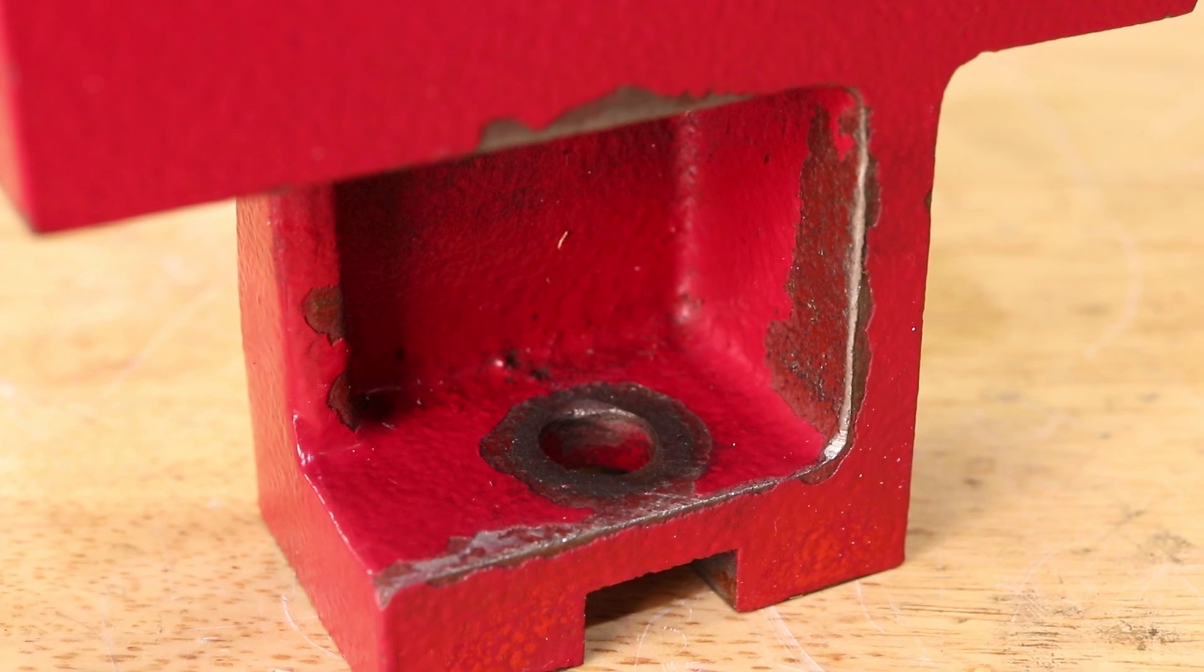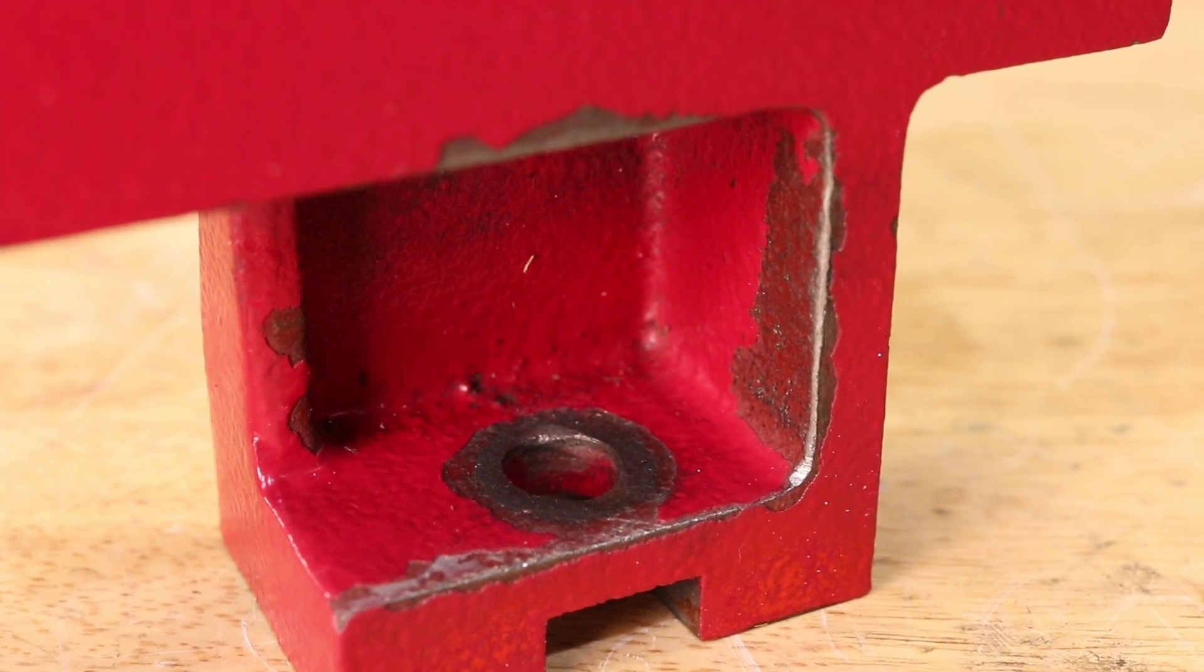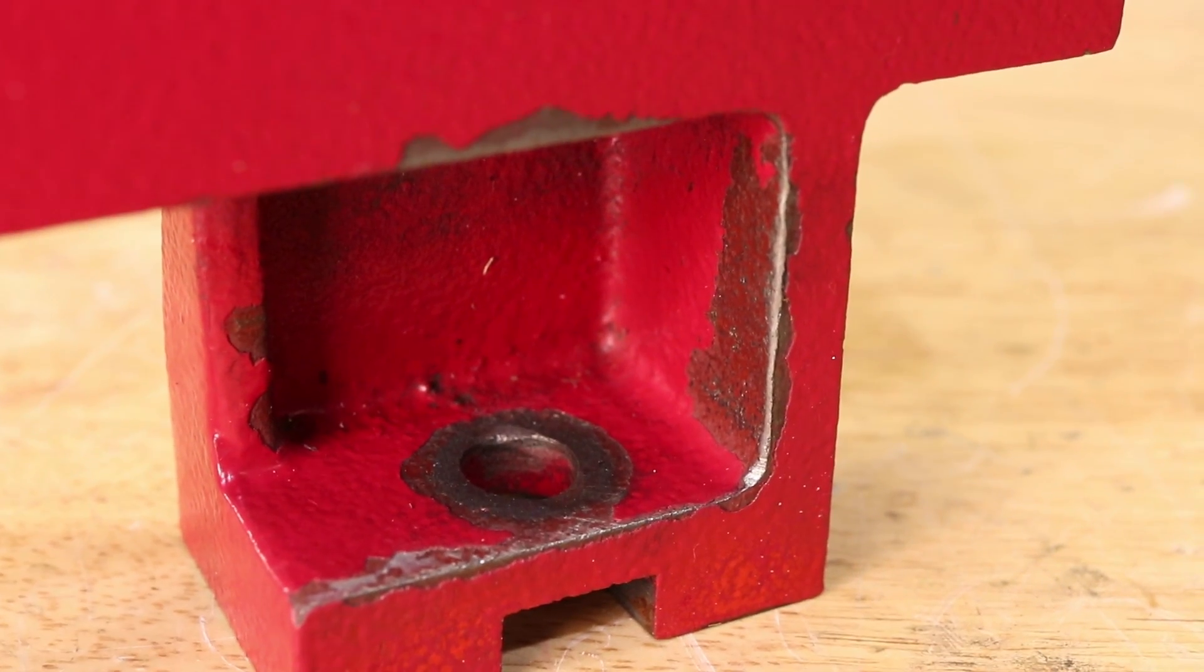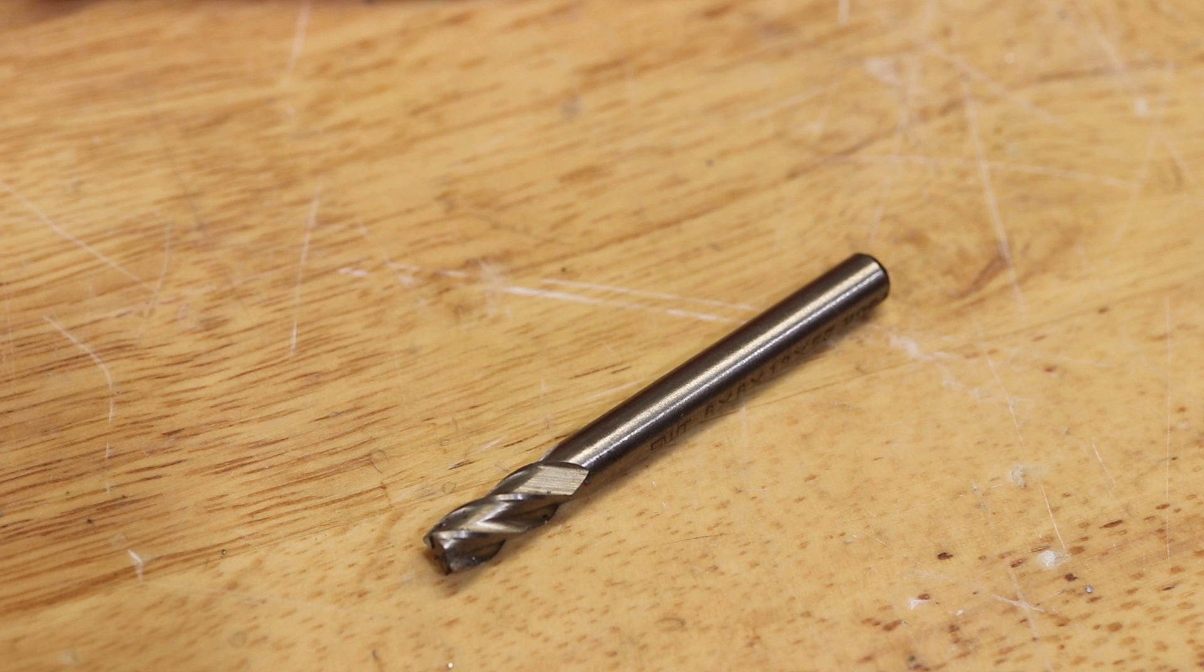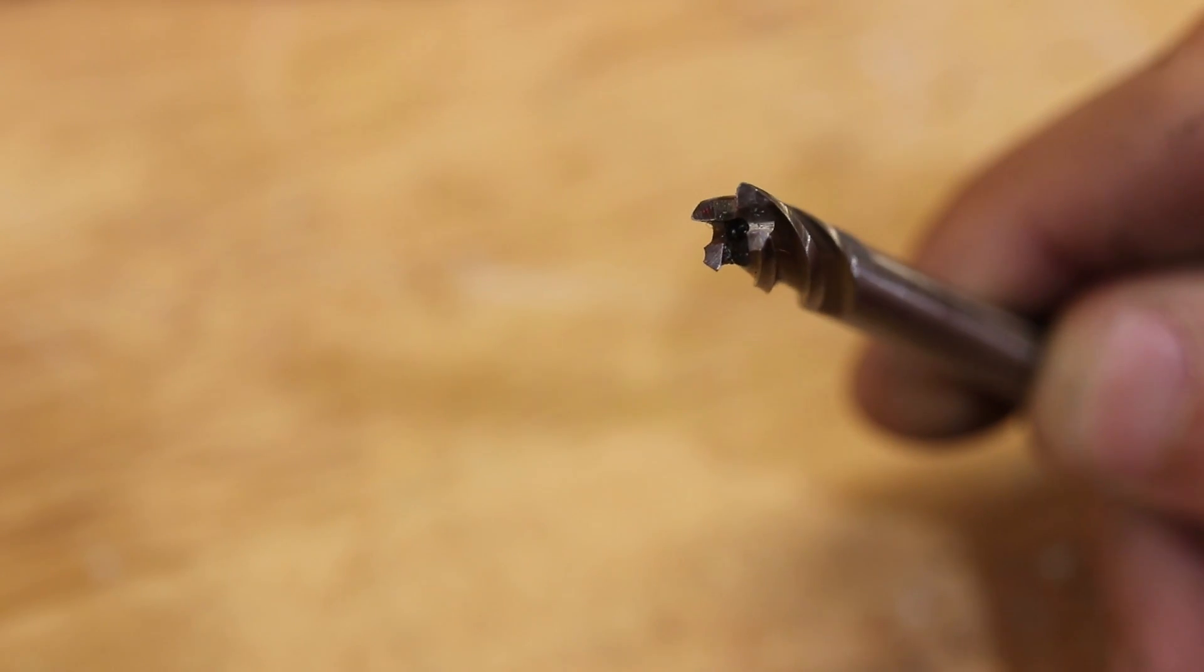Now because the part I'm machining is pretty deep, optimally I'd use a reduced shank end mill to prevent the shank from rubbing on the cast iron. Instead of going out and buying an expensive cutter, I opted to modify this one on the lathe.